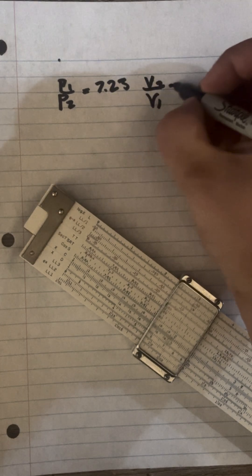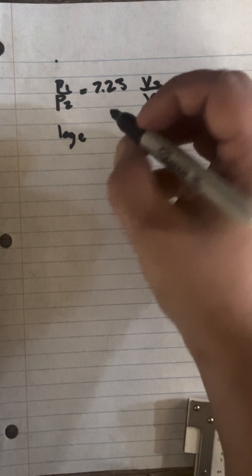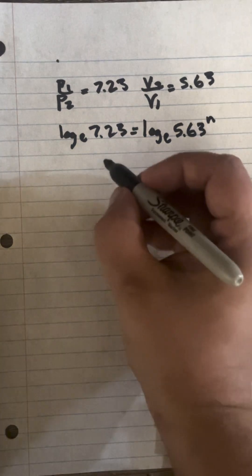Okay guys, I want to show you how we solve for our previous problem using natural logarithms. The way we'll write that out is: natural logarithm 7.23 equals log base e of 5.63 to the n, or you could write it out like this: n equals natural log 7.23 over log 5.63.